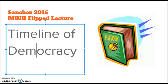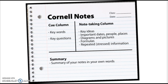Hopefully by the end of today's lecture you'll have a better understanding of our timeline of democracy. First things first, I want to make sure that everybody has their history logbook open to a nice clean sheet of paper. Today we're going to practice a strategy which many of you have used before — something called Cornell note-taking. I've used Cornell notes all through college; it's a great strategy to organize your notes and also go back and review.